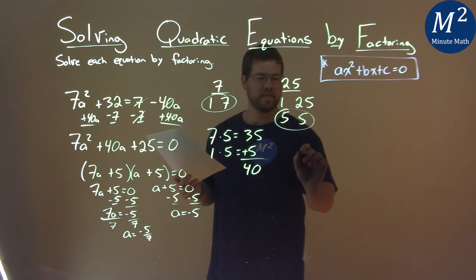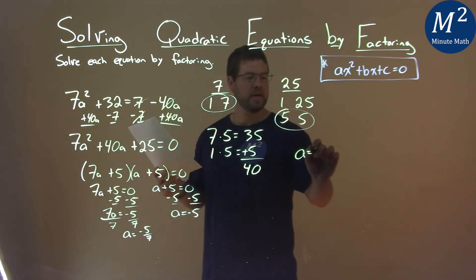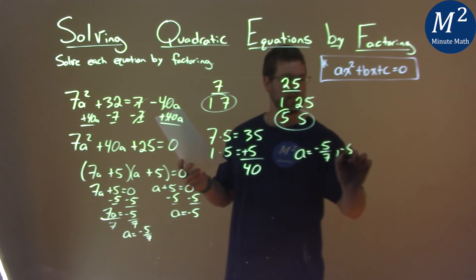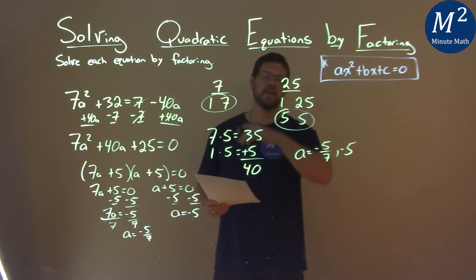We can write this as a single statement: a equals negative 5/7 or negative 5, and that is our final answer.